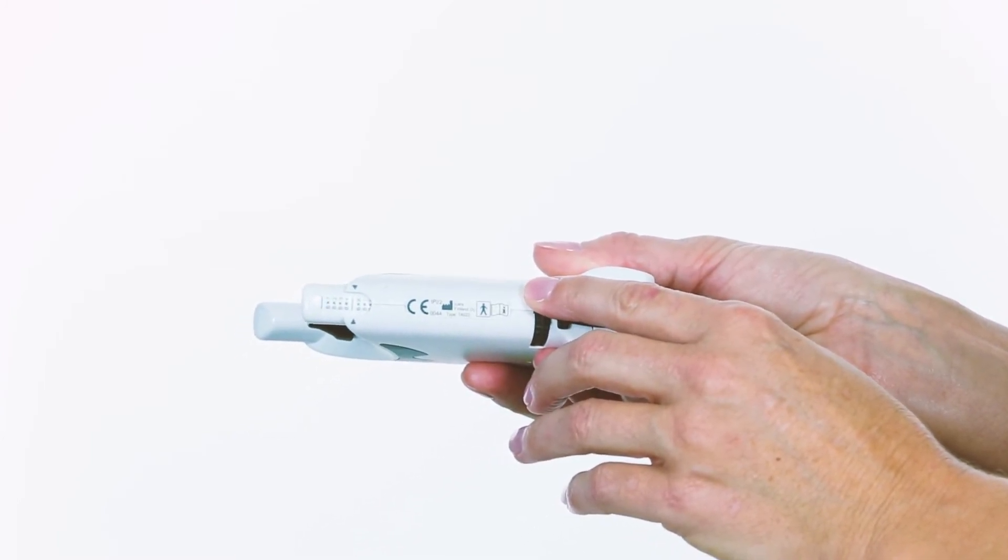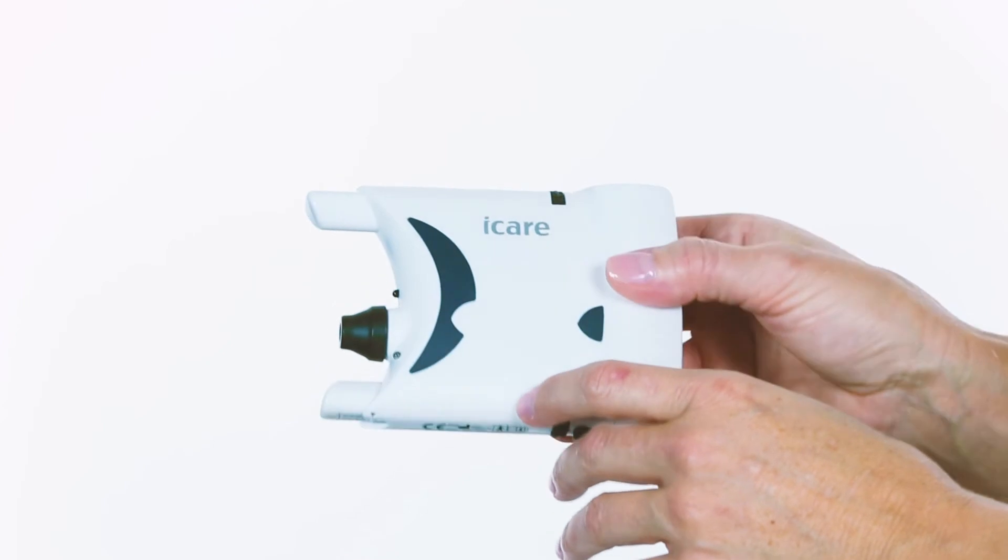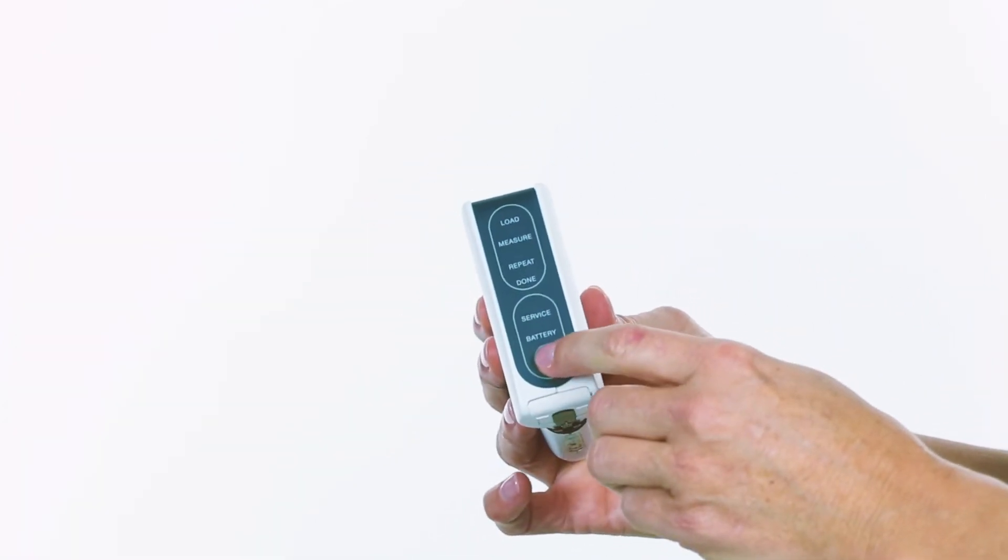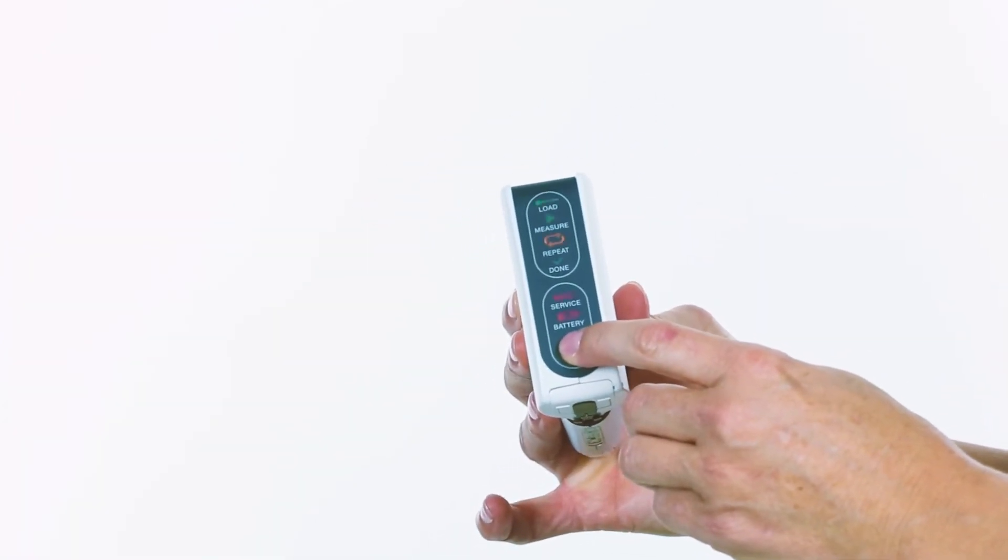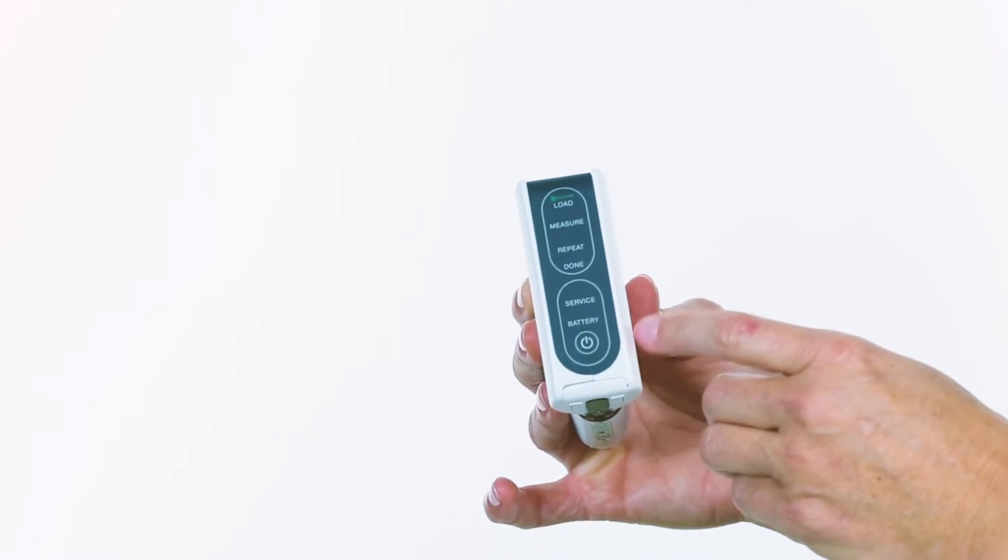Turn on the tonometer and load the probe. Press and hold the power button until you hear a short beep. The load LED light will flash.